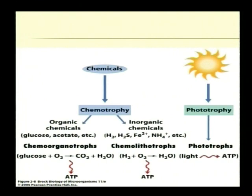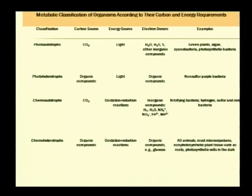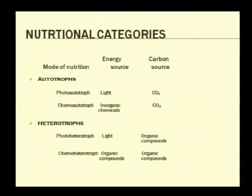In the case of phototrophs, the source of energy is radiant energy. These organisms have an inherent capacity to harvest radiant energy because they contain the green pigment chlorophyll. From the classification table, you can see photo-autotrophs, photo-heterotrophs, chemo-autotrophs, and chemo-heterotrophs, along with the substrates they use and the electron donors used during energy generation.